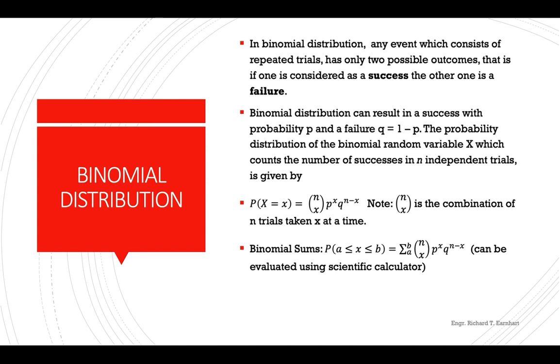In binomial distribution, any event which consists of repeated trials has only two possible outcomes. That is, if one is considered as a success, the other one will be or can be considered as a failure.